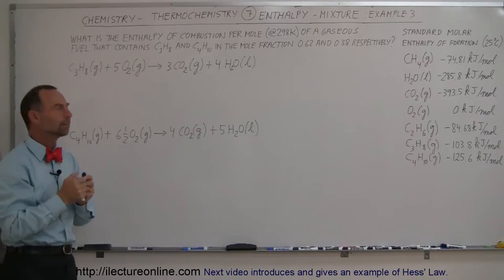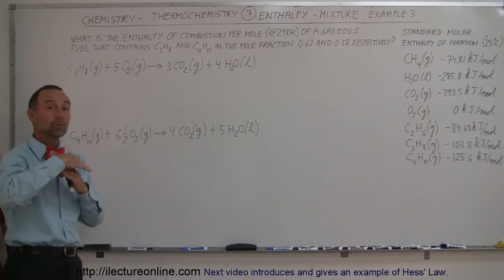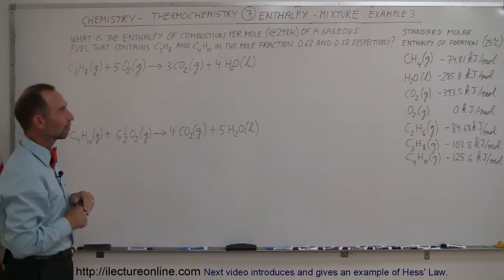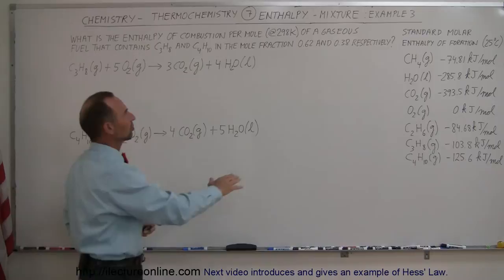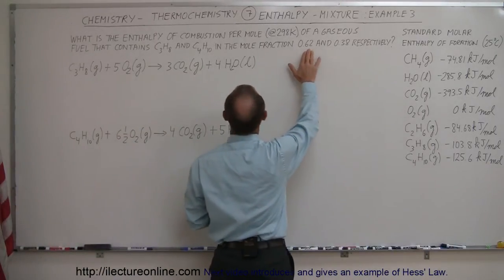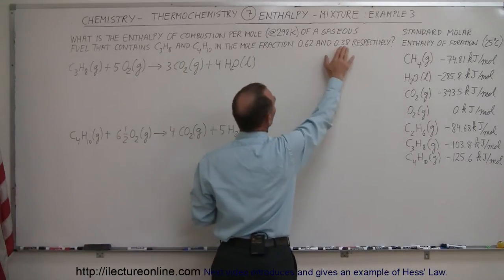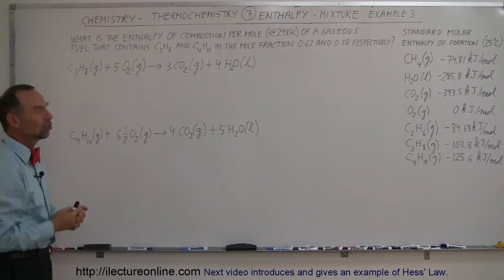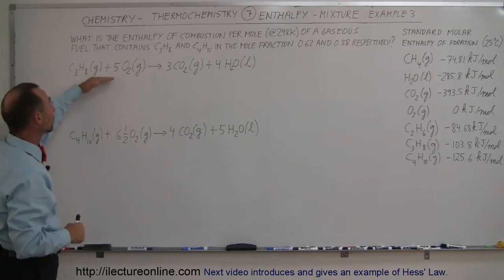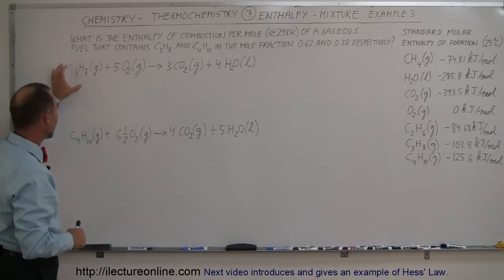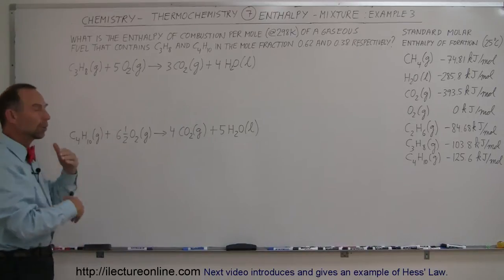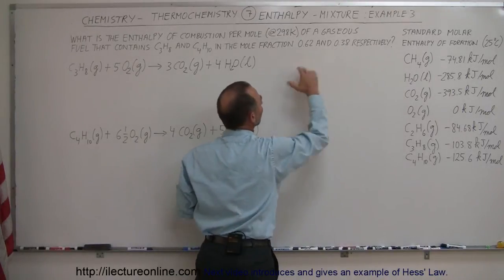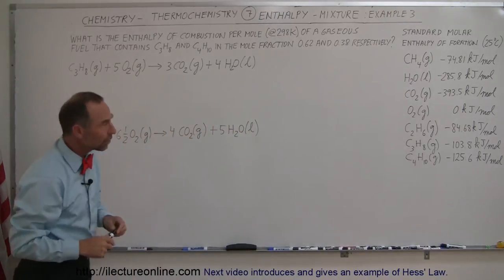Inside a cigarette lighter, butane tends to be under pressure and turns into a liquid, but as soon as it's open to the atmosphere, it will turn into a gas. So the question is: if the mixture is 62% propane and 38% butane, what is the enthalpy for a mixed solution like that? We're going to calculate the enthalpy for each type, starting with propane then butane, and multiply each result by the respective percentage of that fuel in the mixture.